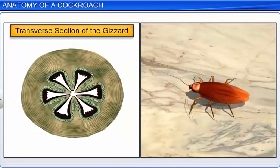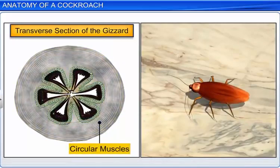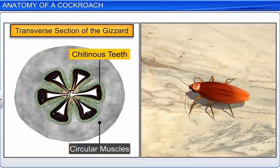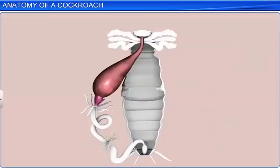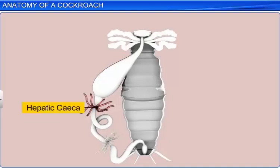The transverse section of the gizzard shows an outer thick layer of circular muscles and an inner thick layer of cuticle which forms six chitinous teeth. At the junction of the foregut and midgut is a ring of six to eight tubules called hepatic or gastric caeca which secrete digestive juice.